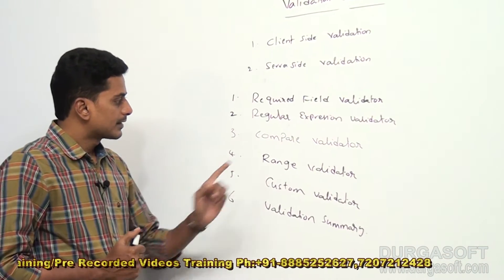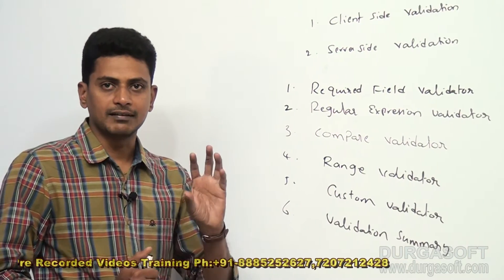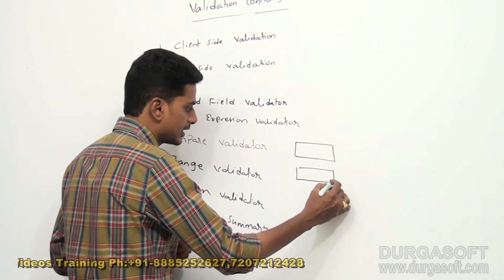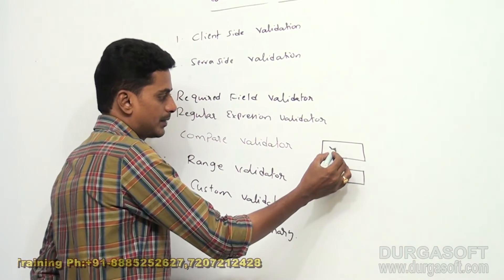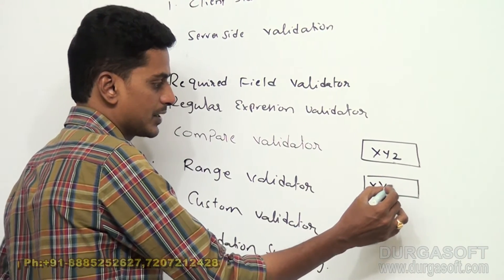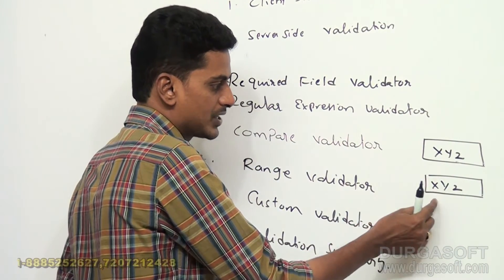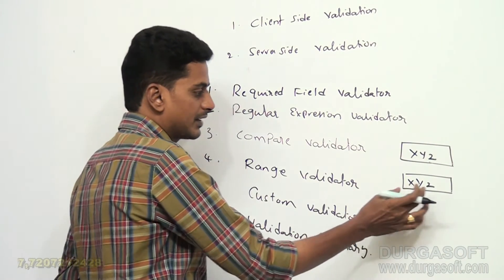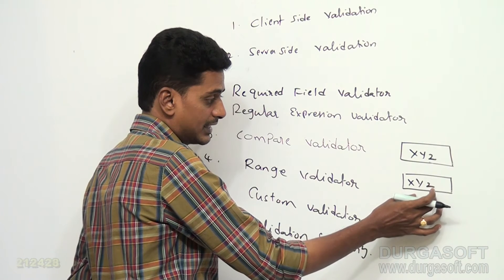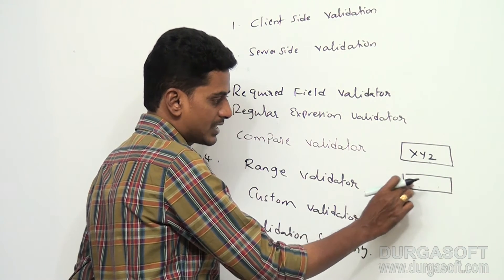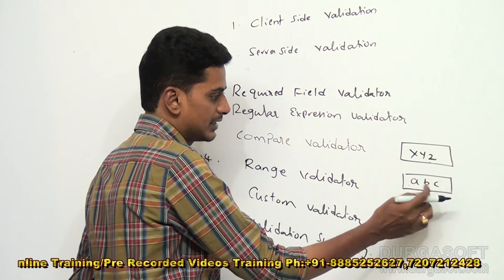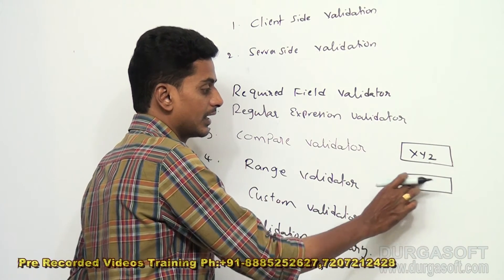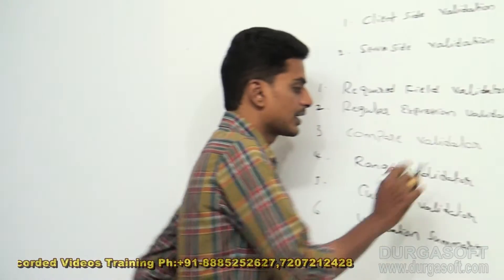Compare Validator is used to compare control data. For example, we have two text boxes — one for password and one for retype or confirm password. If the password is XYZ, the confirmation password should also be XYZ. Both must match, then it returns true and the page is submitted. If you enter XYZ and ABC, they do not match, so the Compare Validator returns false and you get an error message saying password is mismatched. Compare Validator compares data entered in one text box with data in another text box.